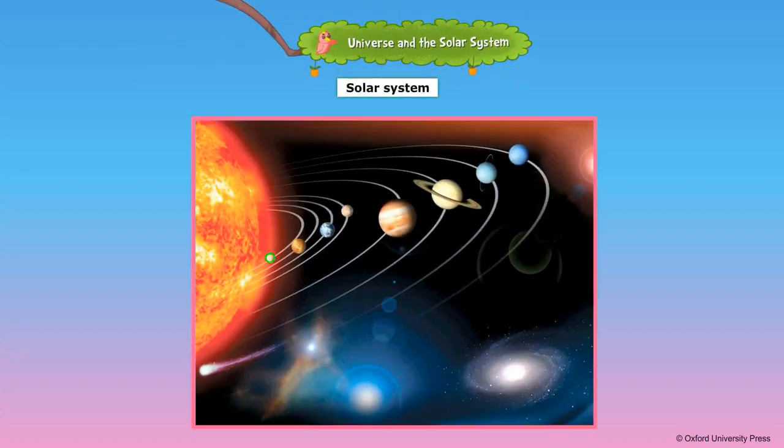Our solar system consists of the sun and its eight planets. Planets are heavenly bodies that go around the sun. They have no light of their own but reflect the light of the sun. The planets are Mercury, Venus, Earth,